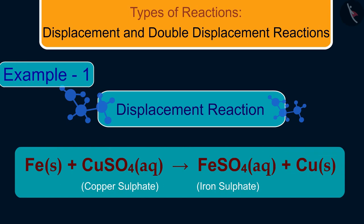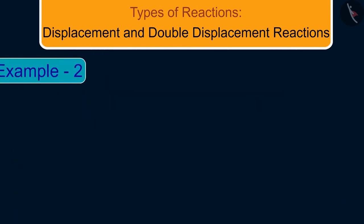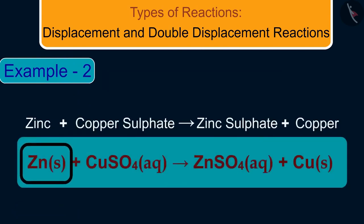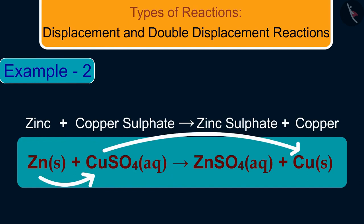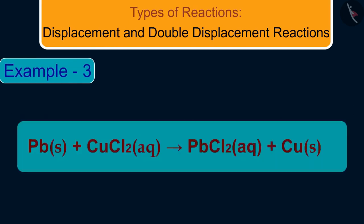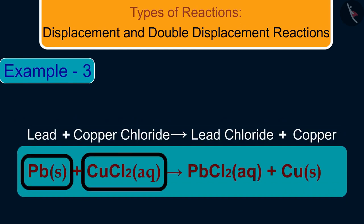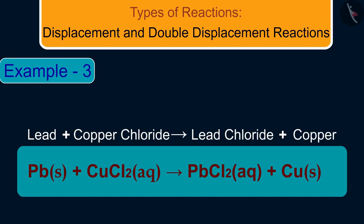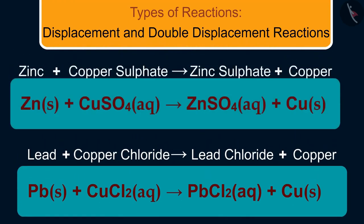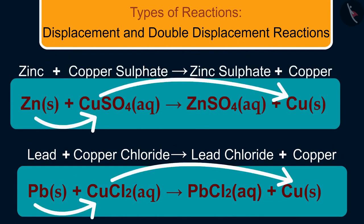This reaction is known as displacement reaction. Other examples of displacement reactions are: first, zinc reacts with copper sulphate and displaces copper to form zinc sulphate and copper. Next, lead reacts with copper chloride — it displaces copper to form lead chloride and copper. Zinc and lead are more reactive elements than copper and therefore displace copper from its compounds.